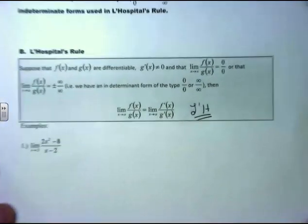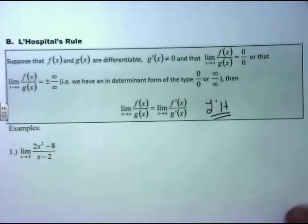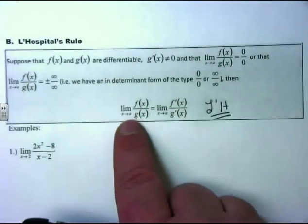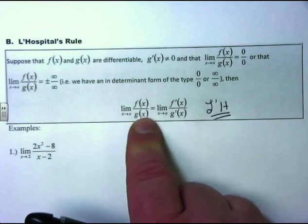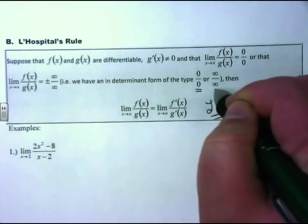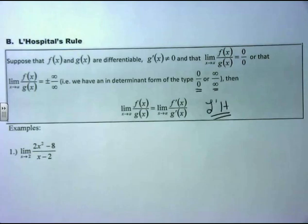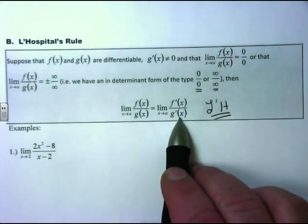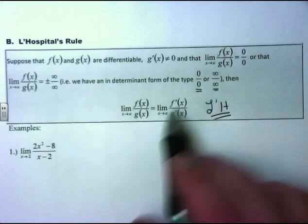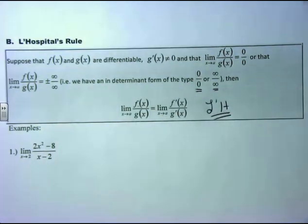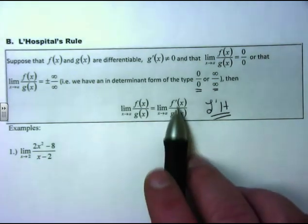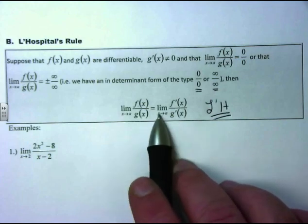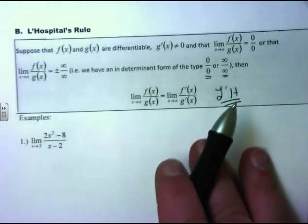What does this really mean? If I take the limit as x approaches a of f(x)/g(x) and I get 0/0 or ∞/∞, I can just take the derivative of the top over the derivative of the bottom and read the limit. It's not the quotient rule — the quotient rule is derivative of the top times the bottom minus the top times the derivative of the bottom, all over the bottom squared. L'Hôpital's rule is what you wish the quotient rule was: just derivative of the top over derivative of the bottom, then redo the limit.